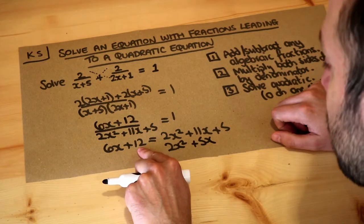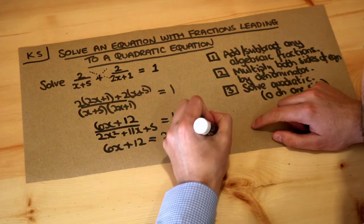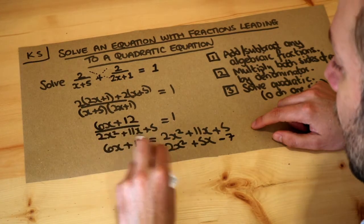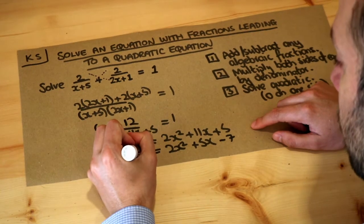We also don't want that +12 there, so we minus 12 from both sides and that's going to give us -7. I did that all in one step there, and because we've subtracted both of those, we're going to have zero.